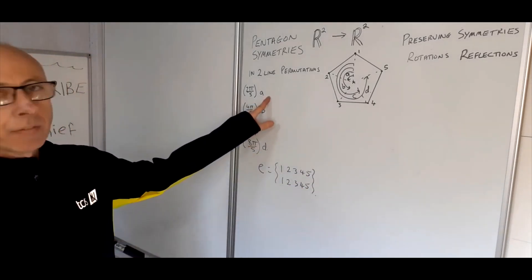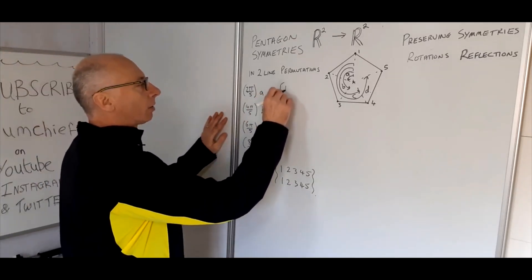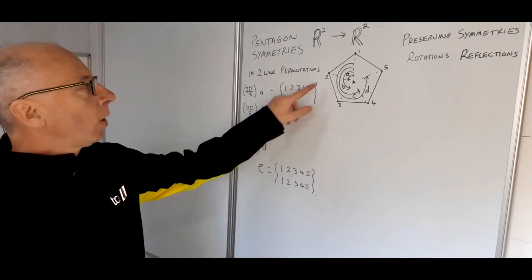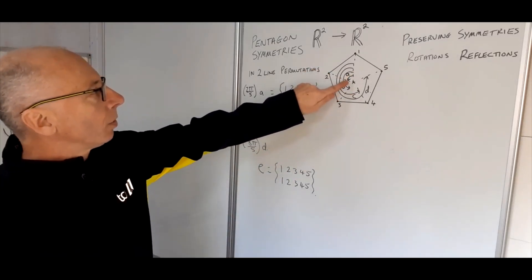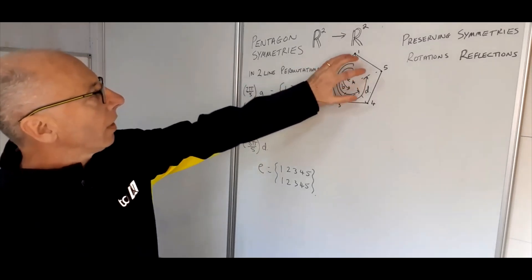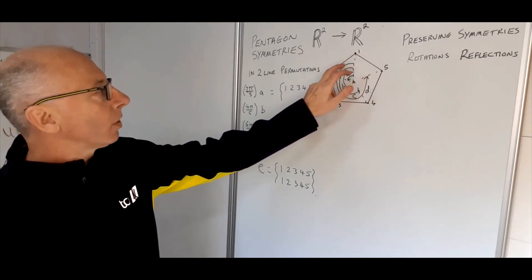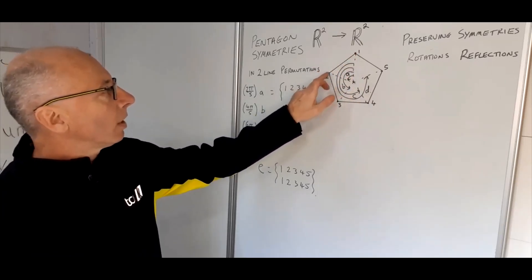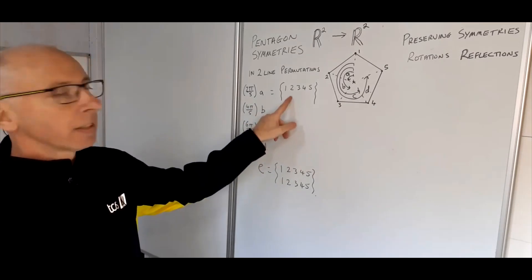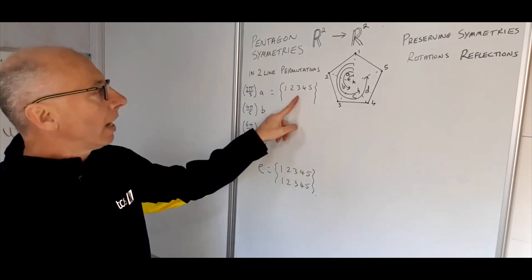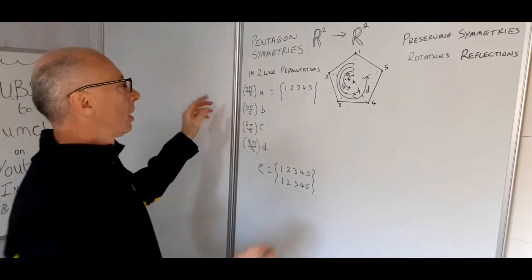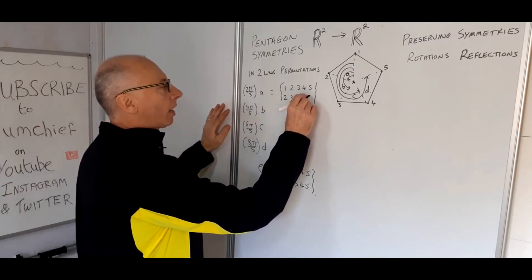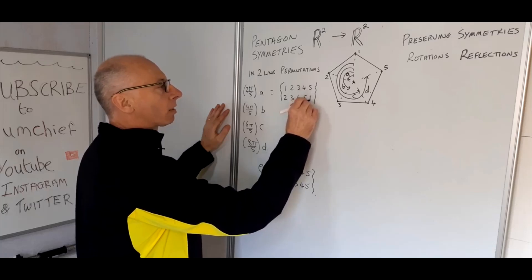Now let's look at A. Starting point 1 — if we rotate through A, which is 2π over 5, everything turns around by one side. So finding the second line is just like adding 1 modulo 5. That gives us 2, 3, 4, 5, and then 5 + 1 = 6 mod 5 = 1.